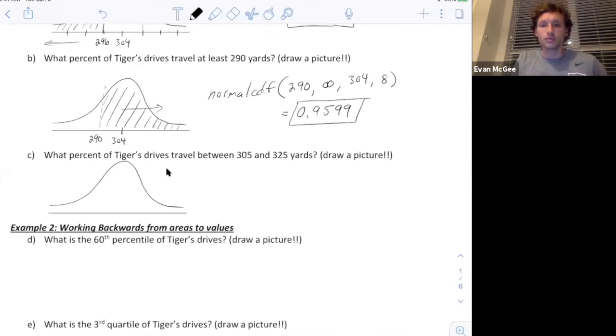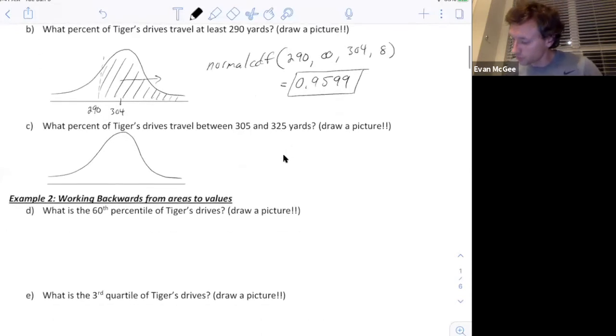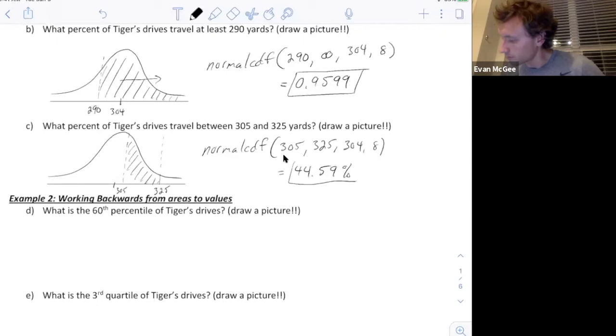Let's do one more example for this technique. What percent of drives traveled between 305 and 325? Draw your picture. If I type that in my calculator, that's going to tell me that it is roughly 44.59%. So 44.59% of his drives will be between these two values. One thing to make a note of: if 96% is above 290, that must mean that 290 is the fourth percentile because this would be the complement of 96, which would be 4% below.